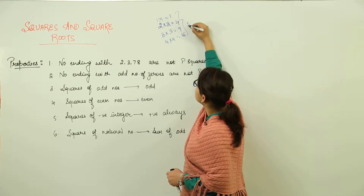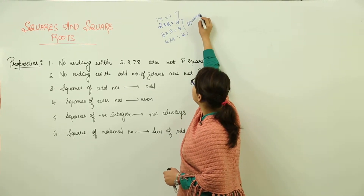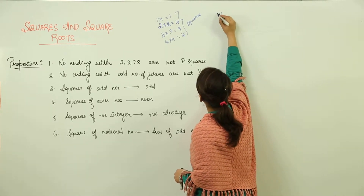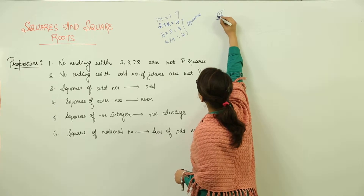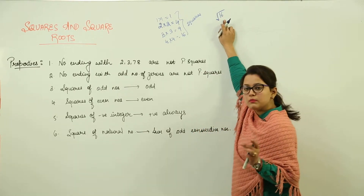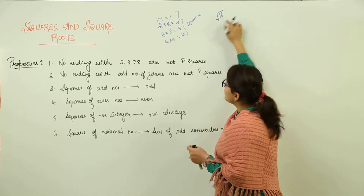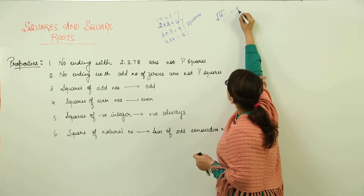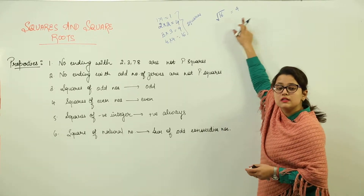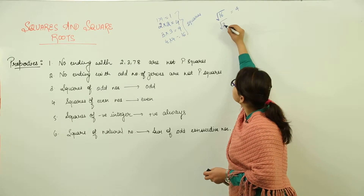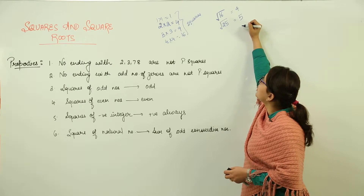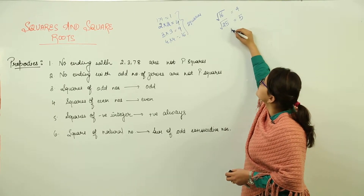These are known as squares. And what do you mean by square roots? Square roots are represented with the radical sign. This means: by multiplying which number two times did we get the result? For example, what is the square root of 16? We multiplied 4 two times to get 16, so the square root of 16 is equal to 4. Similarly, the square root of 25 is equal to 5. These are known as square roots.